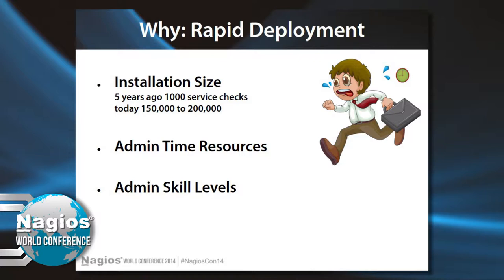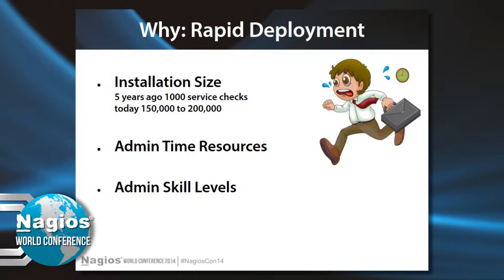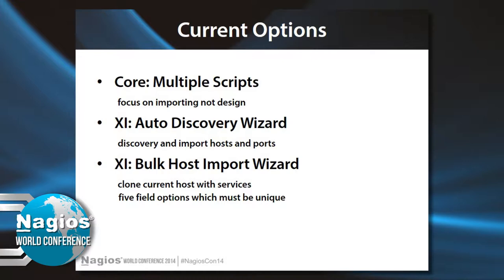Administrator resources are another issue — Nagios administrators are often losing time and don't have time to do some of these projects that management thinks they can do. Also, administrator skills are on the downswing. Many large organizations have Linux administrators who understand everything they need to do, but there are sub-administrators who really can't do things manually because they don't understand the process or have the ability to do the troubleshooting. That's one of the reasons for rapid deployment.